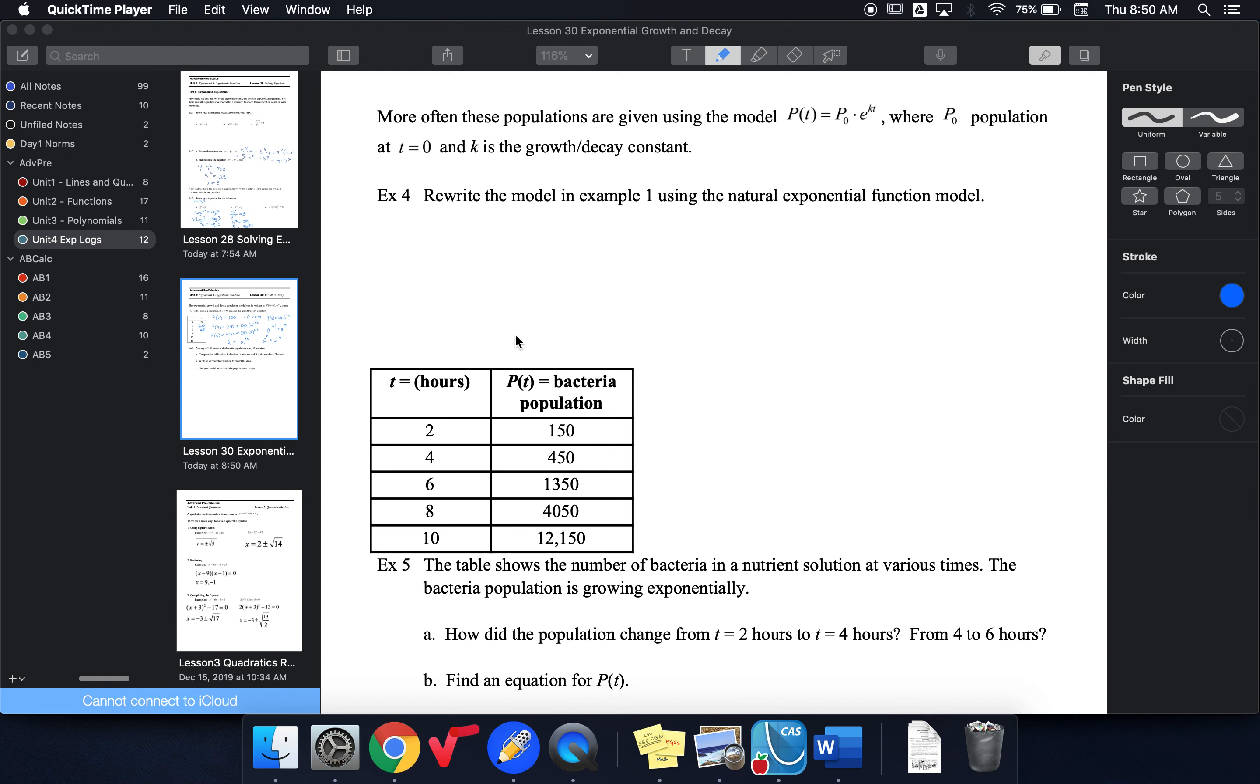Hello students. I'm going to talk to you about the more common population model, which uses a growth factor of e, rather than looking at doubling (making it 2) or tripling (making it 3).